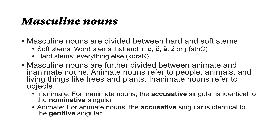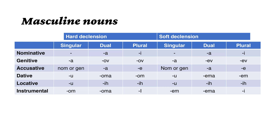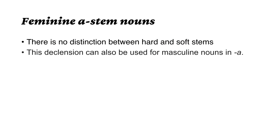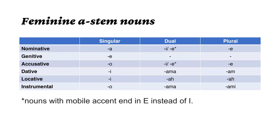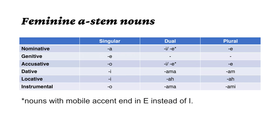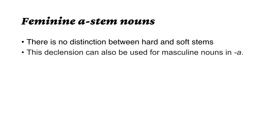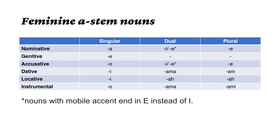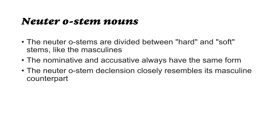We are also looking at inanimate and animate objects. We have feminine A-stems, where we don't look at hard stems and soft stems, or animate or inanimate objects. We have feminine I-stem nouns, which are typically used for words with the -ost ending, while the A-stem nouns are used for words that end with A. And lastly, we have neuter O-stem nouns, which are divided between hard and soft stems.